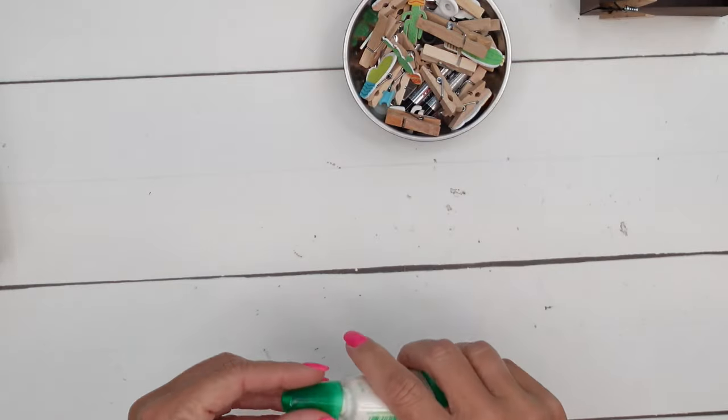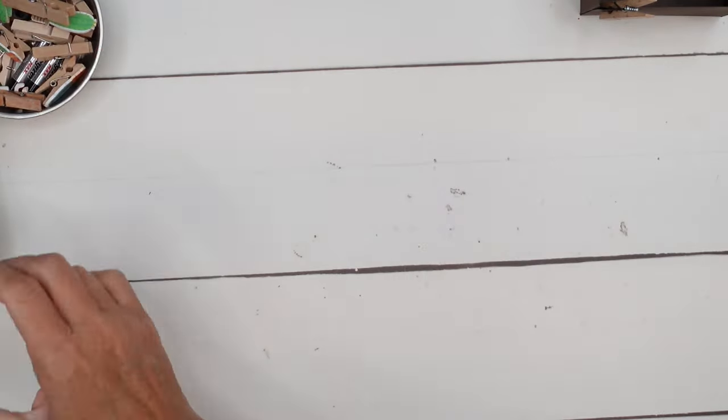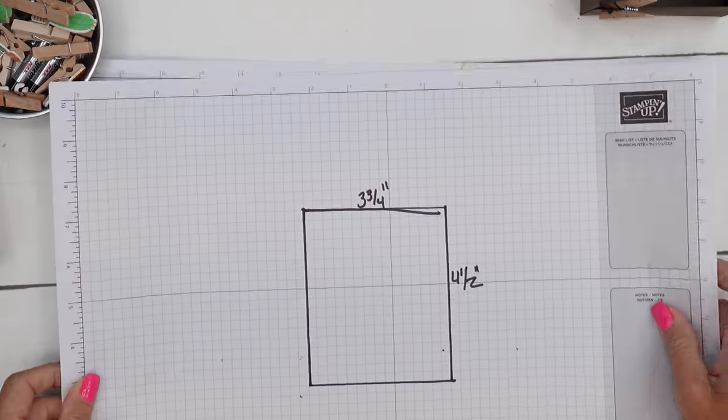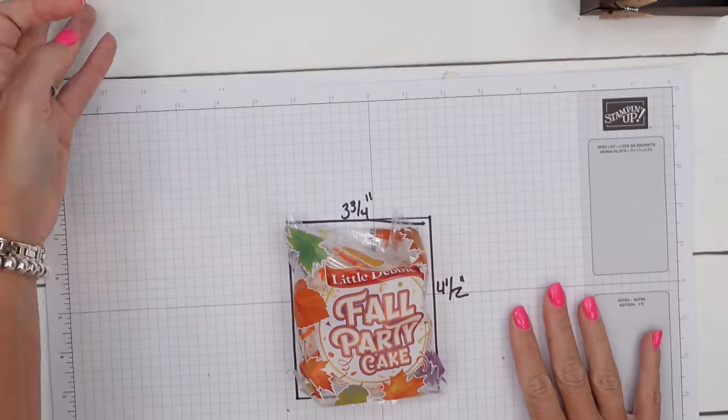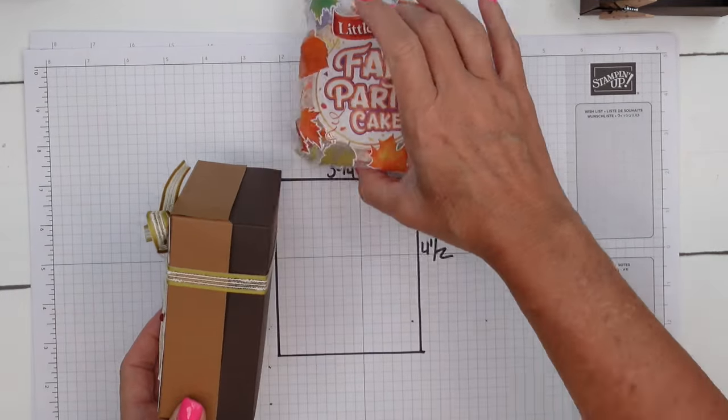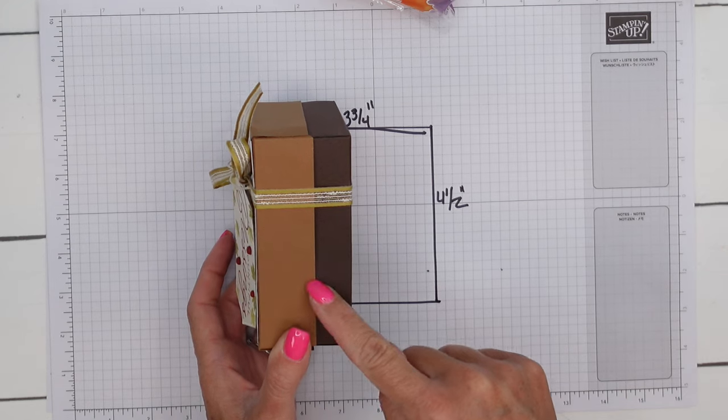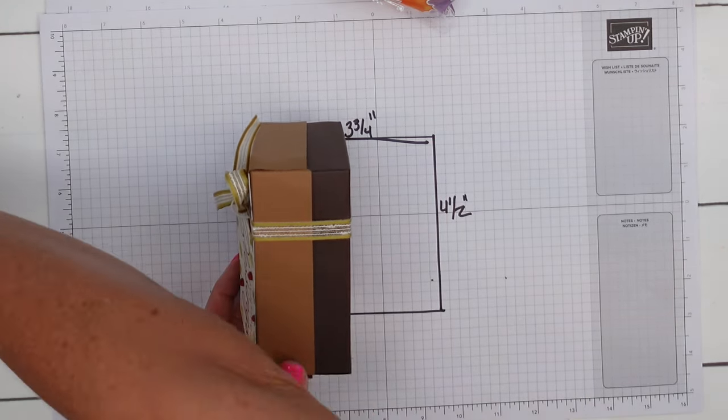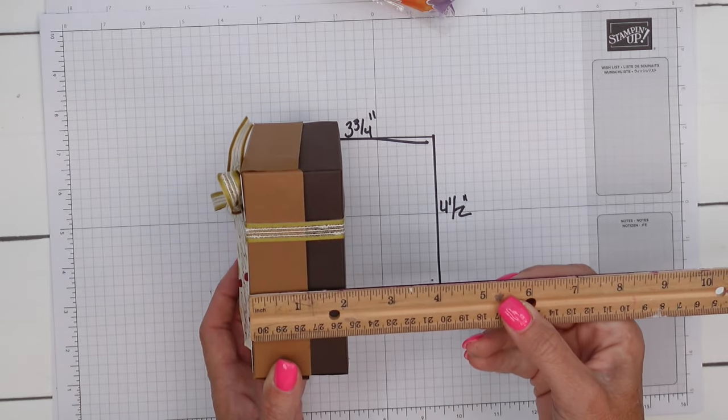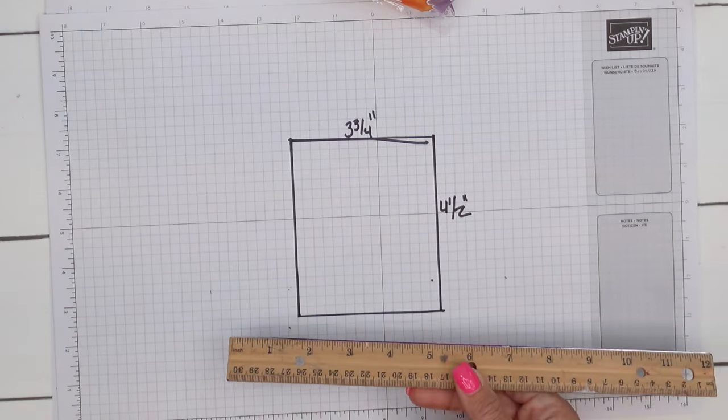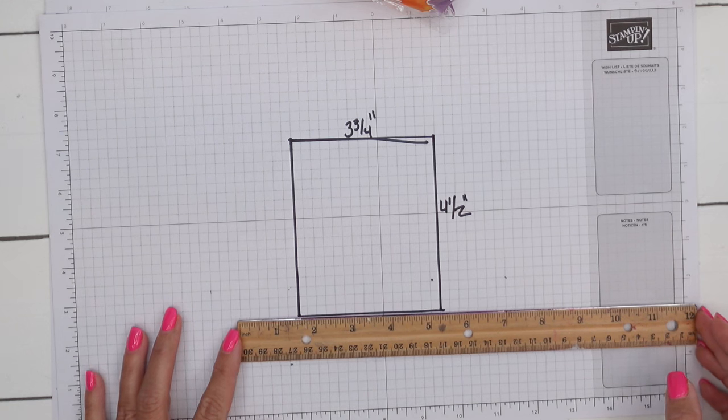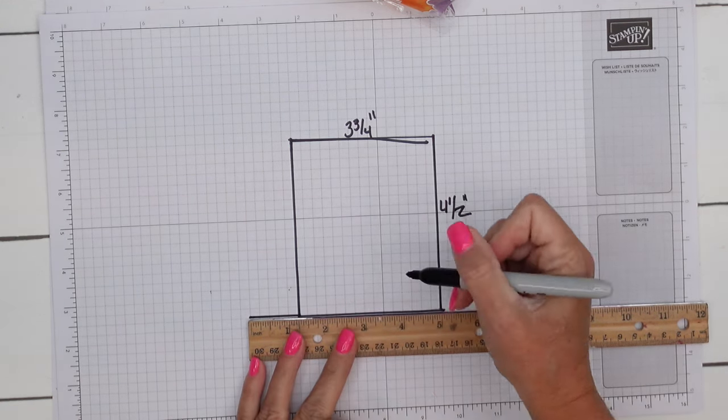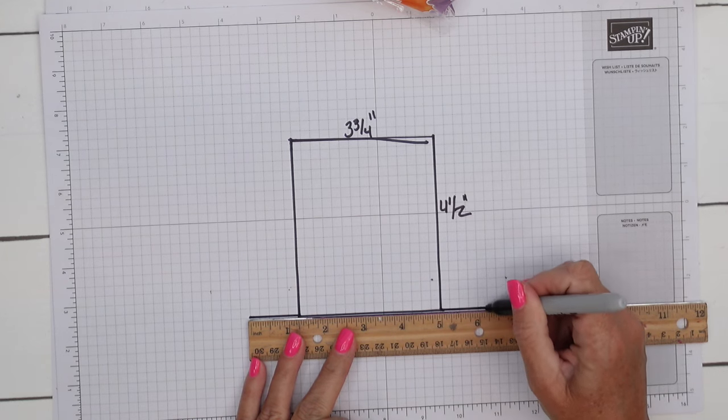Now let's make the lid. We're going to start with that same base measurement. This is the base measurement we started with, three and three fourths by four and a half. And you need to decide how far down you want your box lid to come. I've decided it's going to come down a little more than a half, so one and a fourth. So then again, we're going to measure one and a fourth to there and one and a fourth on this side.